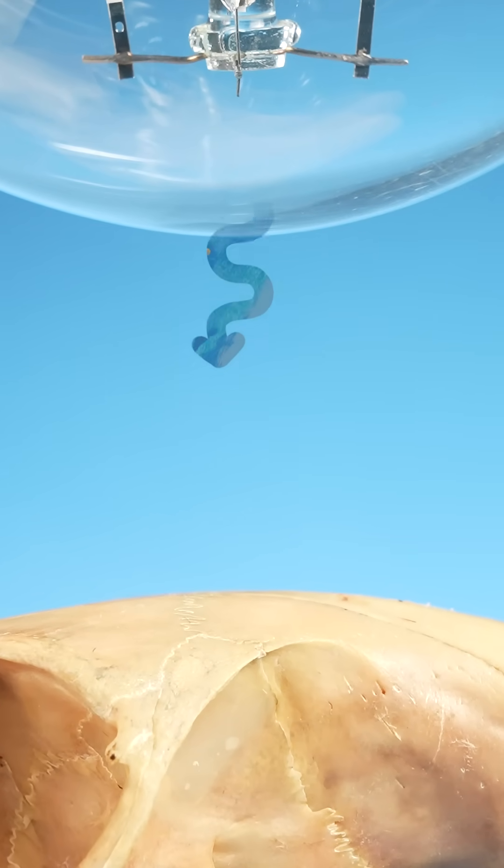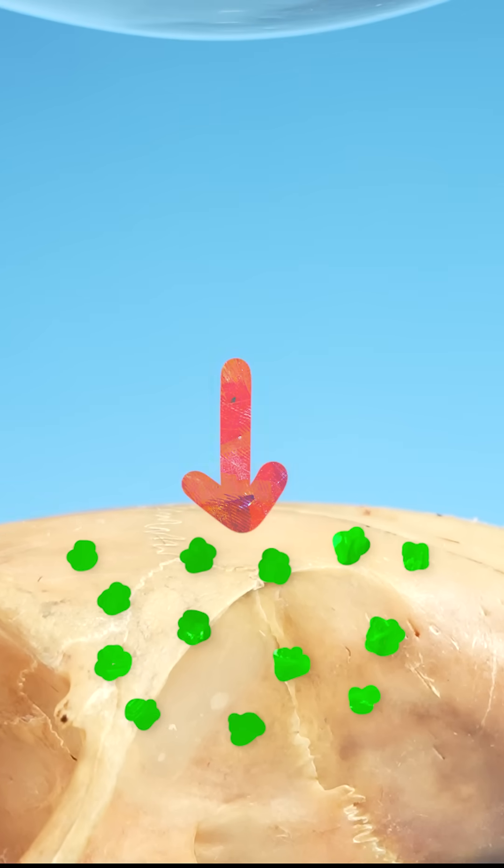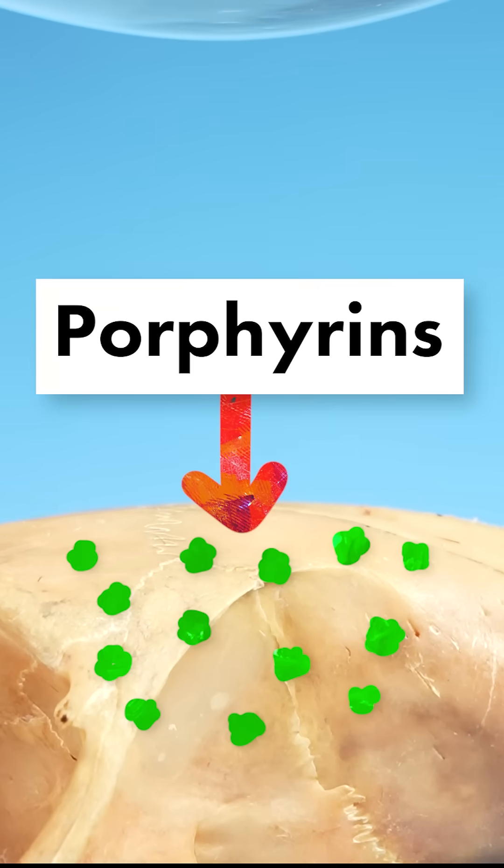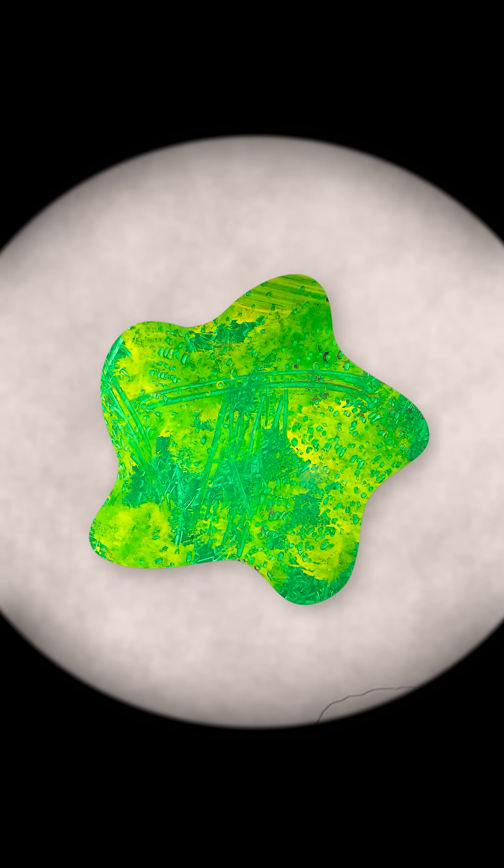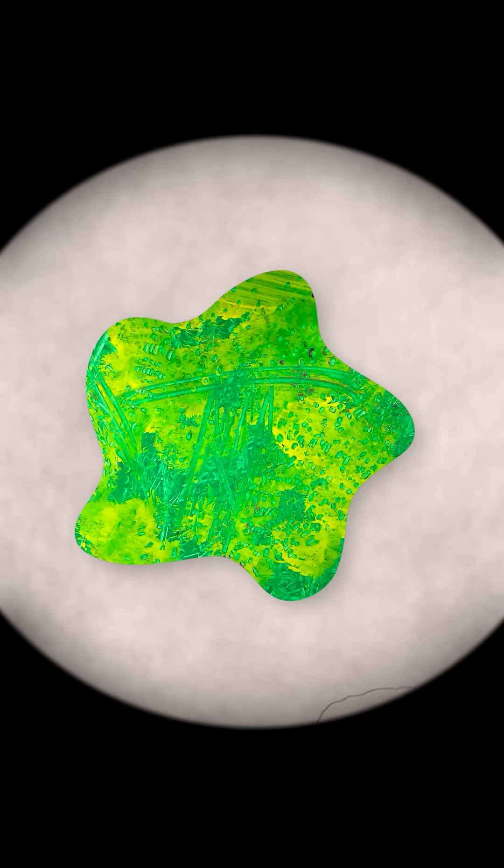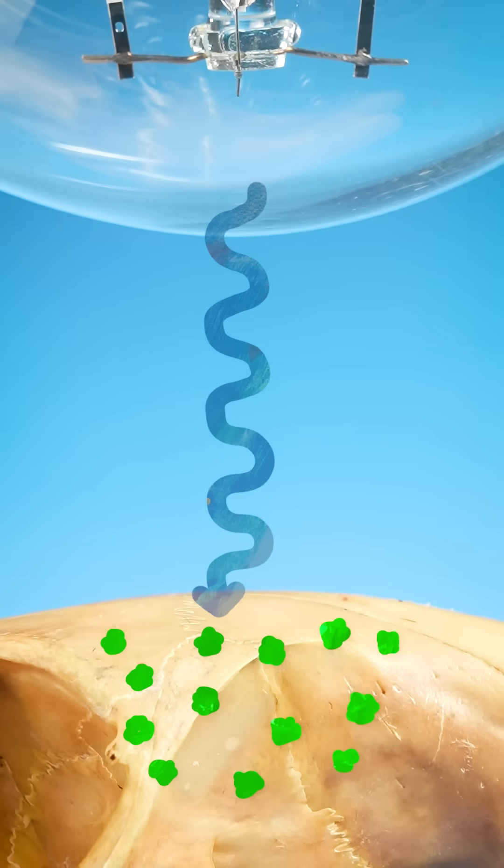Ultraviolet light hits the squirrel's skull and is absorbed by special compounds called porphyrins. After absorbing the UV light, the porphyrins gain a ton of energy, which they release as a different kind of light.